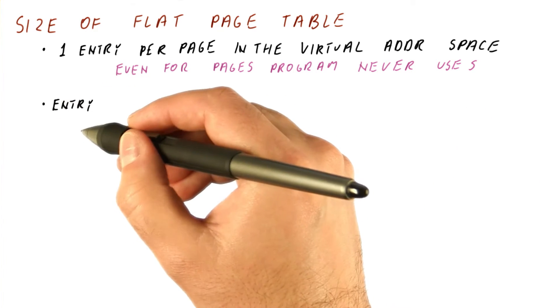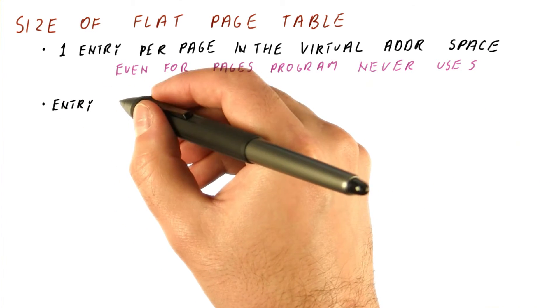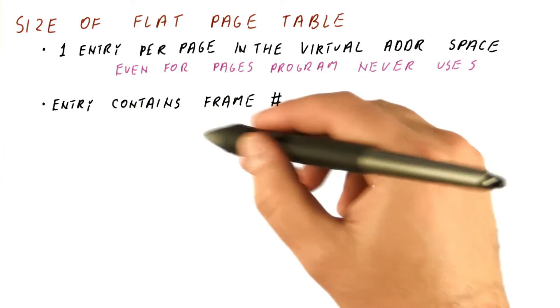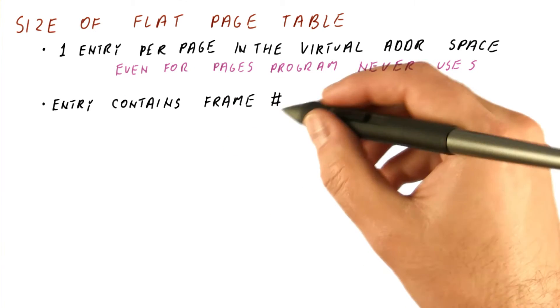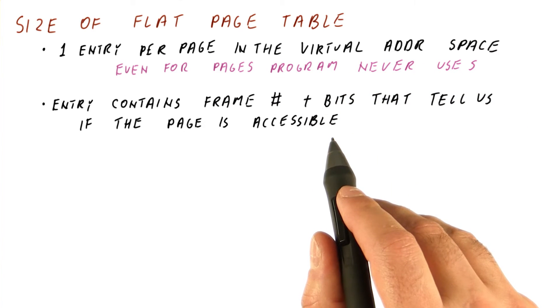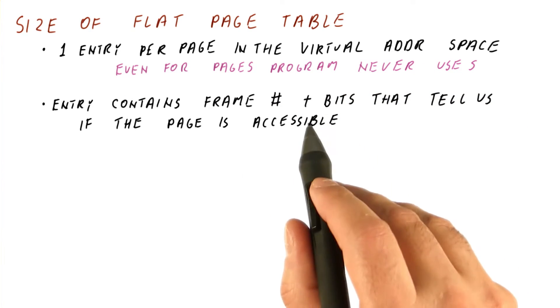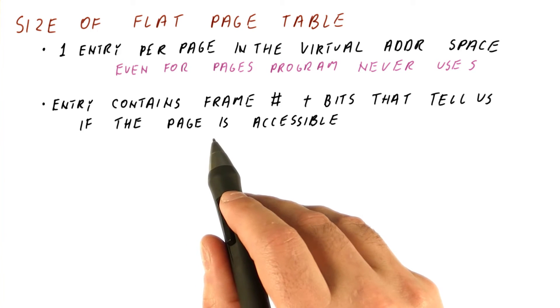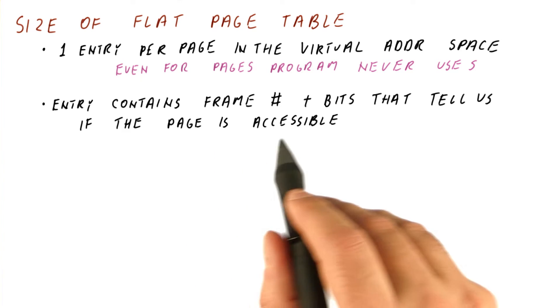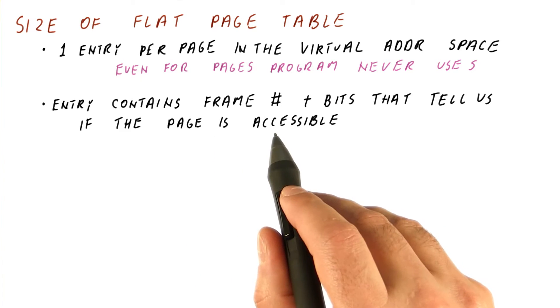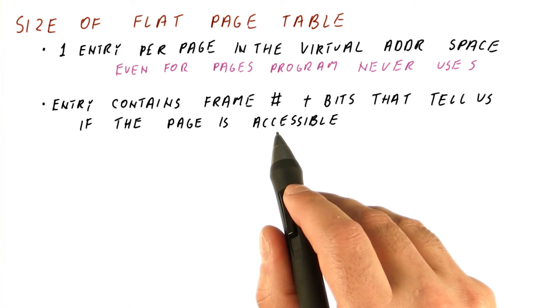The entry in such a page table contains the frame number, plus a few bits that tell us if the page is accessible — for example, the protection bits, or a bit that tells us that the page is not really in physical memory at all.